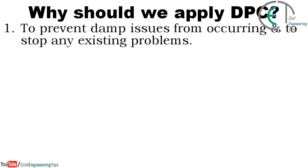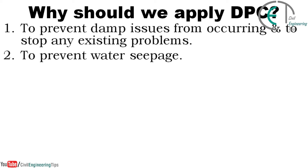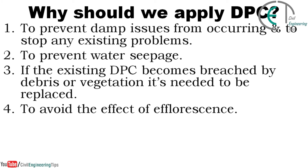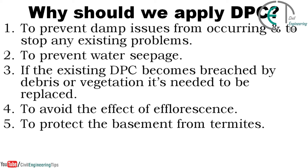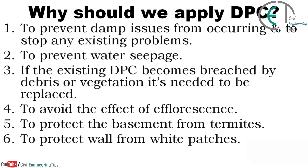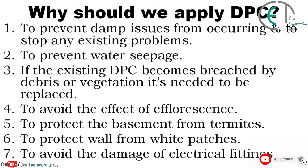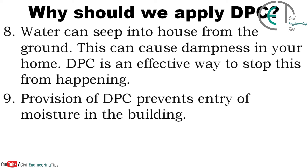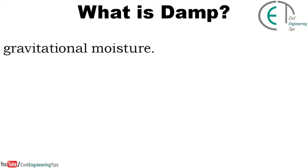Why should we apply DPC? To prevent damp issues from occurring and to stop any existing problems, to prevent water seepage, and if the existing DPC becomes breached by debris or vegetation it needs to be replaced. Other reasons include: to avoid the effect of efflorescence, to protect the basement from termites, to protect walls from white patches, to avoid damage to electrical fittings, and to stop water seeping into the house from the ground causing dampness.